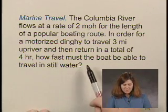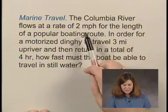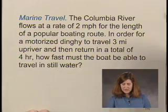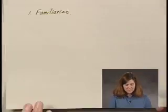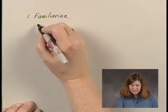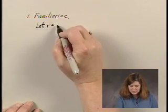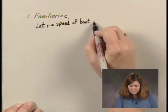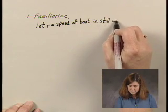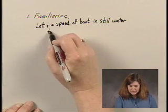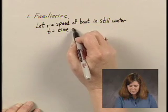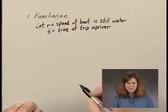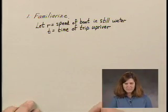We don't know the rate of the boat, but we know the rate of the current. We know the distances are both three miles, and we know the total time is four hours. Since we're asked how fast the boat must be able to travel in still water, let's let r equal the speed of the boat in still water. And we'll let t equal the time of the trip upriver. Now we've defined two variables, and we'll have to work until we get an equation in just one variable.